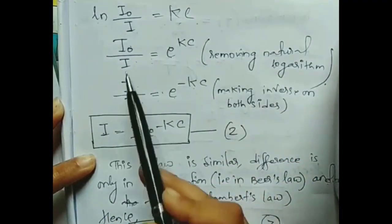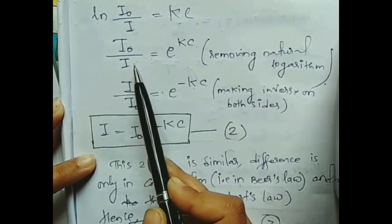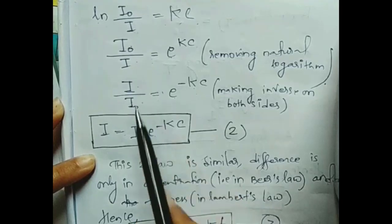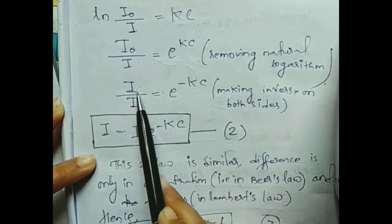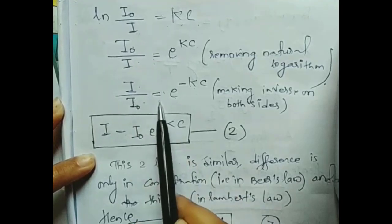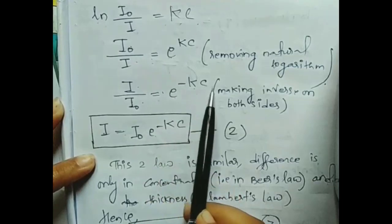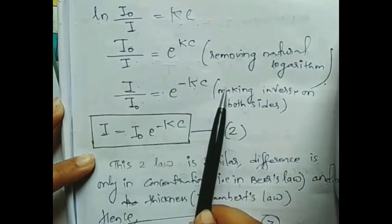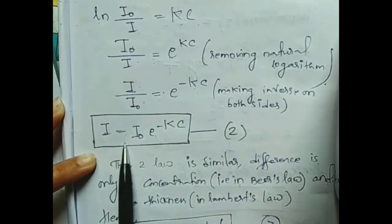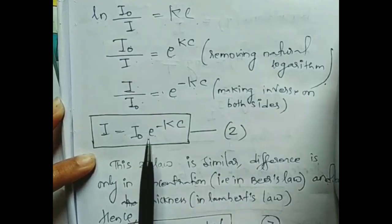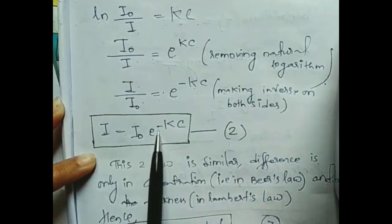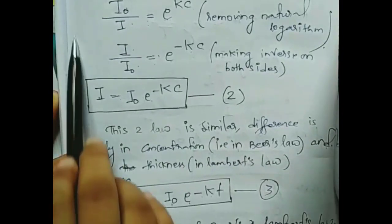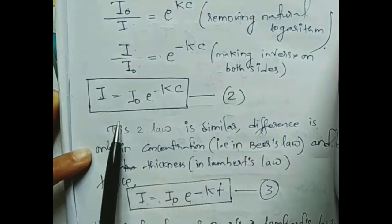Inversing both sides: I by I naught equals e to the power minus KC, because we are making it inverse. Therefore I equals I naught times e to the power minus KC.